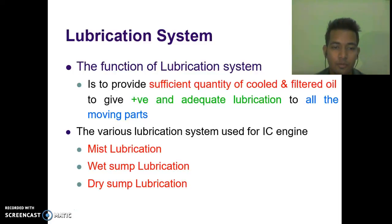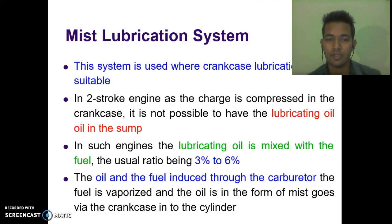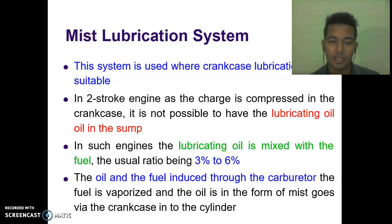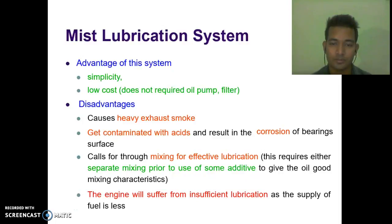The various lubrication systems used for IC engines are mist lubrication, wet sump lubrication, dry sump lubrication, etc. First, we discuss the mist lubrication system. This system is used where crankcase lubrication is not suitable, such as in two-stroke engines, where the charge is compressed in the crankcase and it is not possible to have lubricating oil in the sump. In such engines, the lubricating oil is mixed with fuel at a usual ratio of 3 to 6%. The oil and fuel are induced through the carburetor; the fuel vaporizes and the oil in mist form goes via the crankcase into the cylinder. Advantages are its simplicity and low cost, whereas disadvantages include heavy exhaust smoke, contamination with acids causing corrosion of bearing surfaces, requirement for thorough mixing for effective lubrication, and risk of insufficient lubrication when fuel supply is less.